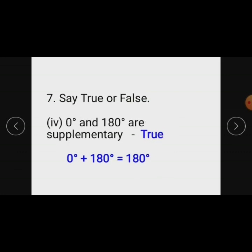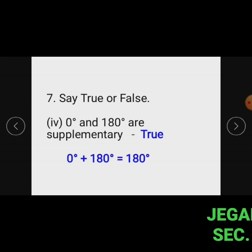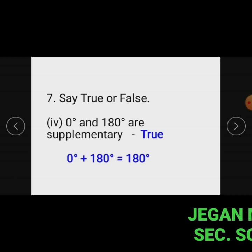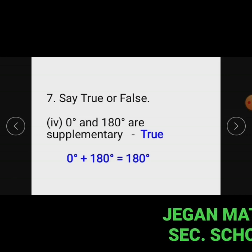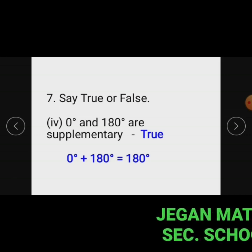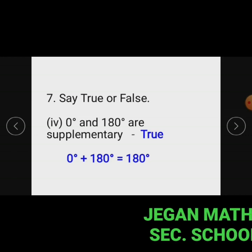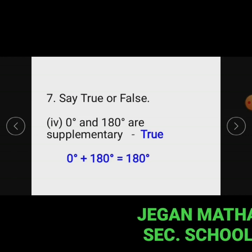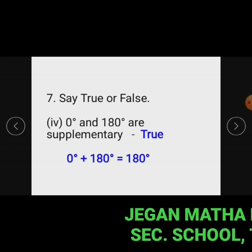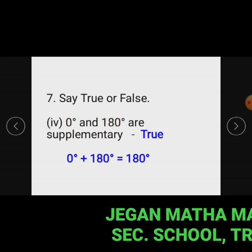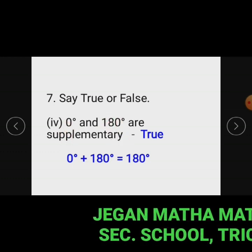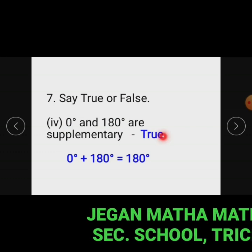Subdivision 4: 0 degrees and 180 degrees are supplementary. The statement is true because the angles 0 degrees and 180 degrees add up to 180 degrees. So the given angles 0 degrees and 180 degrees are supplementary to each other. The statement is true.